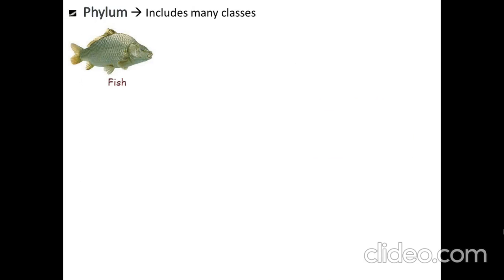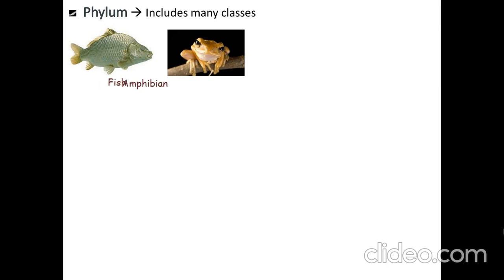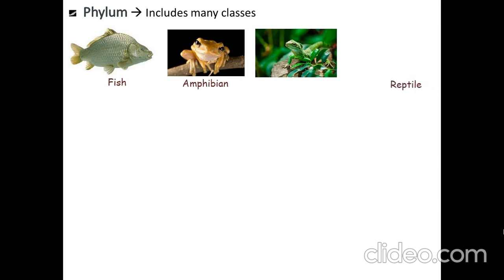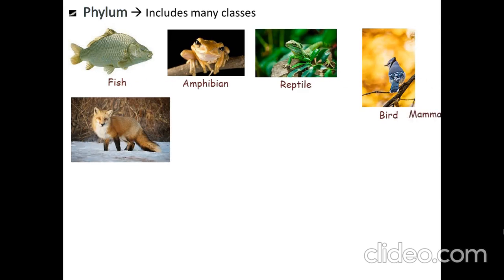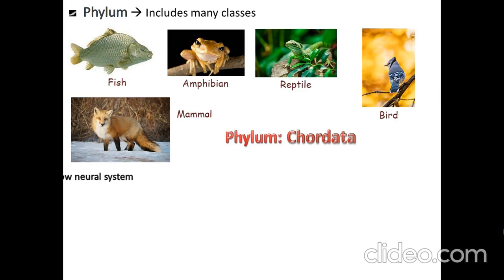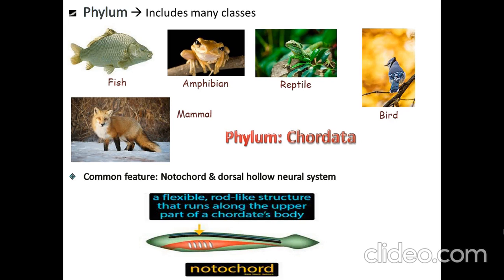Next is phylum. Slitting buses, fish, amphibia, frog, car, and lemon — they all must be defined by the possession of a notochord and a dorsal hollow neural system. The notochord is a flexible, rod-like structure that runs along the upper part of the body.